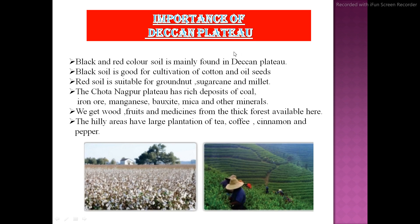Importance of the Deccan Plateau: black and red colored soil is mainly found here. Black soil is good for the cultivation of cotton and oilseeds, while red soil is suitable for groundnut, sugarcane, and millet. The Chhota Nagpur Plateau has rich deposits of coal, iron ore, manganese, bauxite, mica, and other minerals. We also get wood, fruits, and medicines from the thick forests. The hilly areas have large plantations of tea, coffee, cinnamon, and pepper.